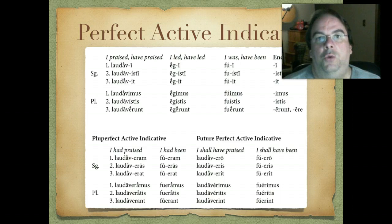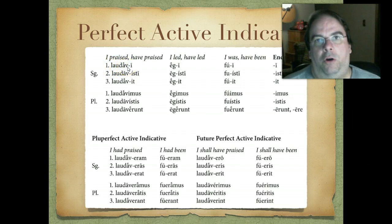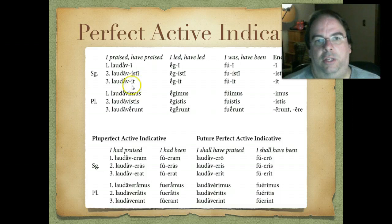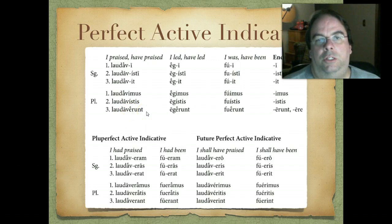Here are some of the new endings we're going to memorize. We take the perfect active stem — the third principal part with the I dropped — and here are the endings we add to it. First person singular, we just put that I back on. The singular forms are: -ī, -istī, -it. And then the plural: -imus, -istis, -ērunt. Those are the forms we stick on the perfect stem to form the perfect active indicative.